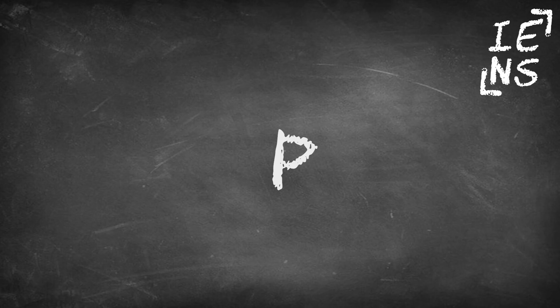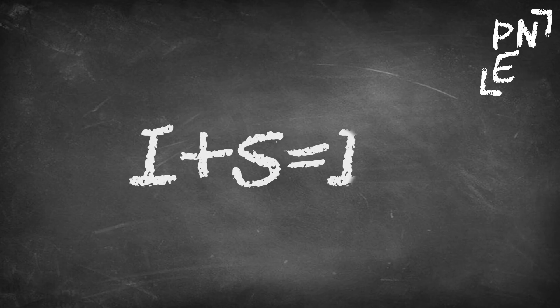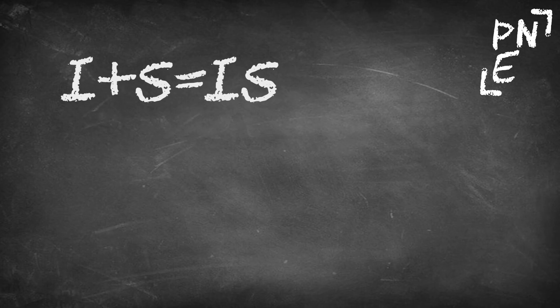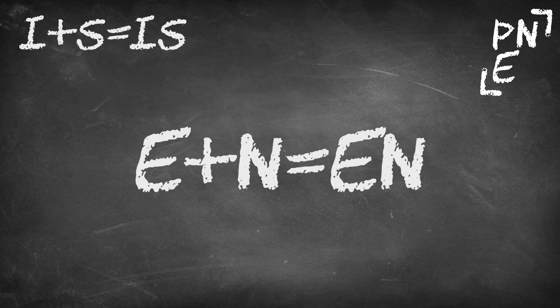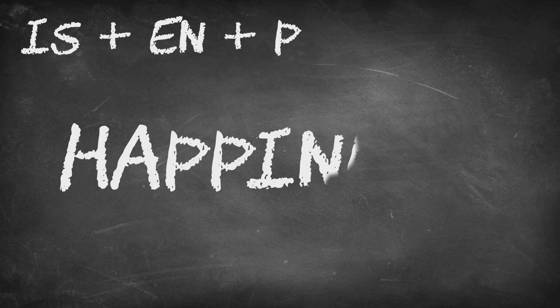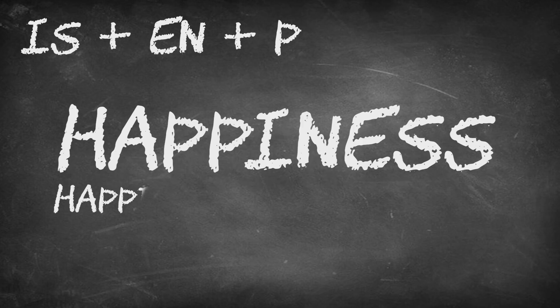Now we need to do a bit of addition. We're going to start using the exponents from our exponent bank. So first things first, we want to add the I and the S. I plus S equals IS, right? Right. Next, we want to add the E and the N. E plus N equals EN. Shout out to all of my EN brothers and sisters out there. Moving on. So now we have IS plus EN plus P, right? This is basically our final equation here. So let's rewind a bit — you're going to want to type out the word happiness. Happiness equals IS plus EN plus P.